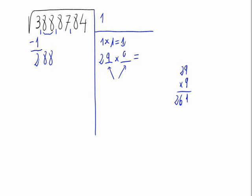As we said, 29 times 9 is 261. Now, we get the 9 on top, and we write 261 and take it away from 288, which gives us 27. So now, we get down the next block, which is 87.